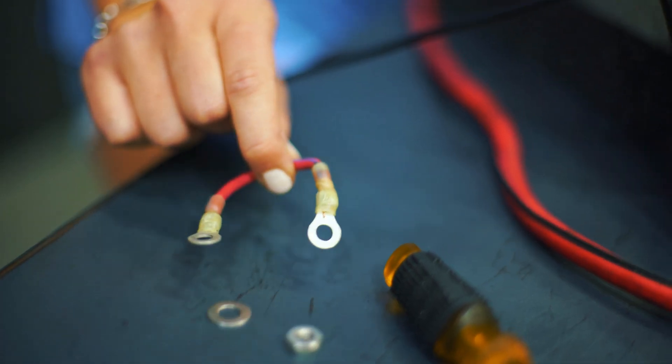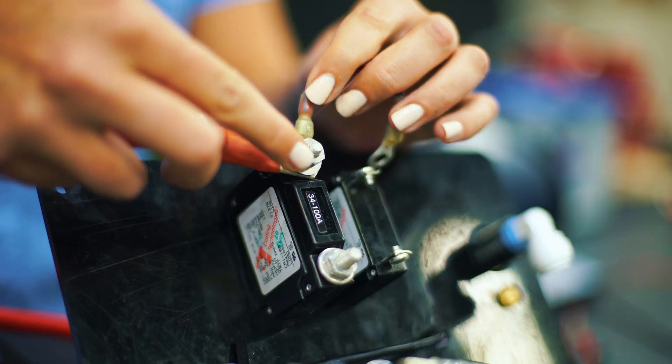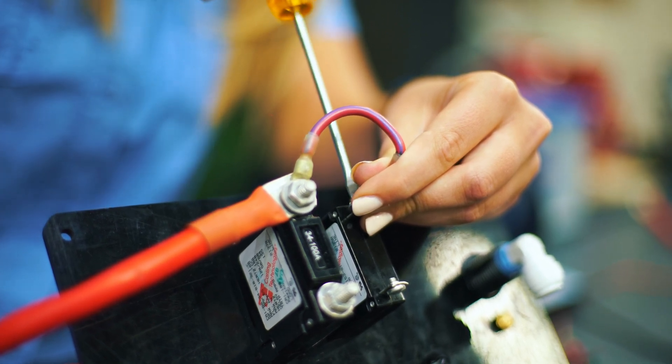Next, we'll bridge the connection between the positive power source to the boost pump breaker by securing it between the washers and nut. Once again, tightened in place with your wrench.